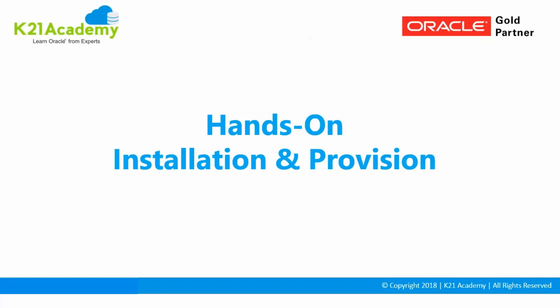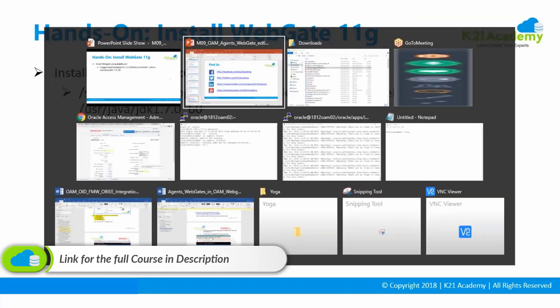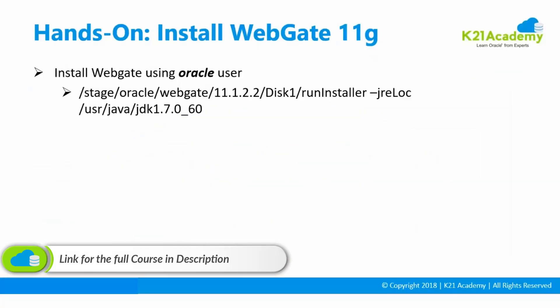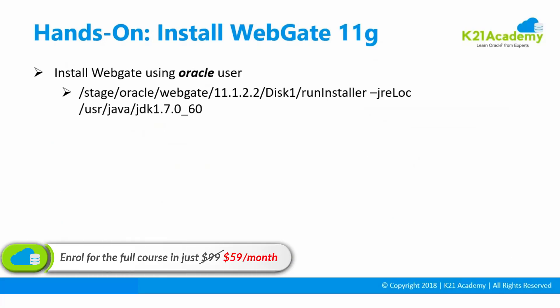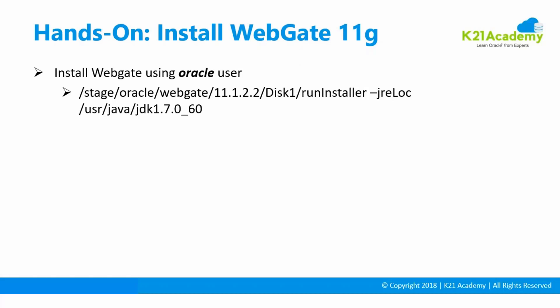Let's log in to the server and look at the hands-on activity guide. I've already downloaded the activity guide which I'm going to show you. We go to the server, open the VNC screen, and log in as the user. Make sure that whatever user installed Oracle HTTP Server or the web server, that same user should also be the owner of the WebGate. You go to the stage Oracle WebGate directory and run the installer - it's like any other Oracle Universal Installer.